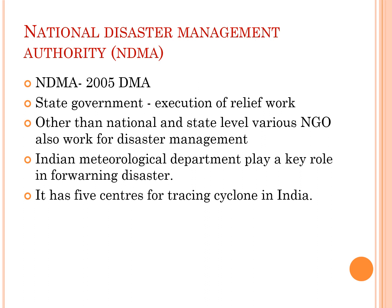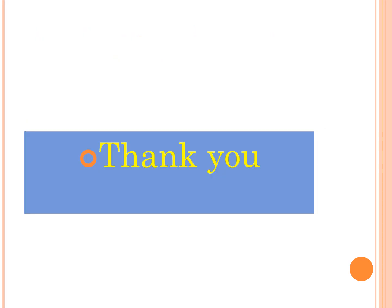Regarding the Disaster Management Authority established by the Disaster Management Act 2005, according to India's federal structure, state governments are responsible for the execution of relief work. The National Disaster Management Authority guides state governments and provides funds. NGOs also work for disaster management. The Indian Meteorological Department plays a key role in forewarning disasters, with five centers for tracing cyclones located in Kolkata, Bhubaneswar, Visakhapatnam, Chennai, and Mumbai.